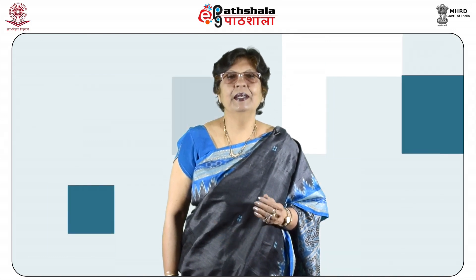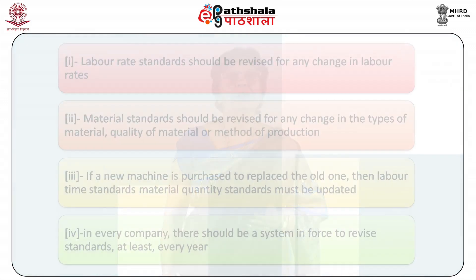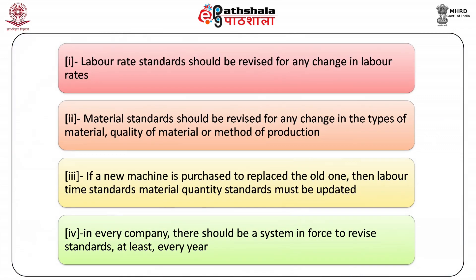A company must make a plan or program for revision of budgets so that standards can be set at a current attainable level. The following must be done for revision of standards: first, labour rate standards should be revised for any change in labour rates; second, material standards should be revised for any change in types of material, quality of material or method of production; third, if a new machine is purchased or replaced, labour time standards and material quantity standards must be updated; and fourth, in every company, there should be a system to revise standards at least every year.